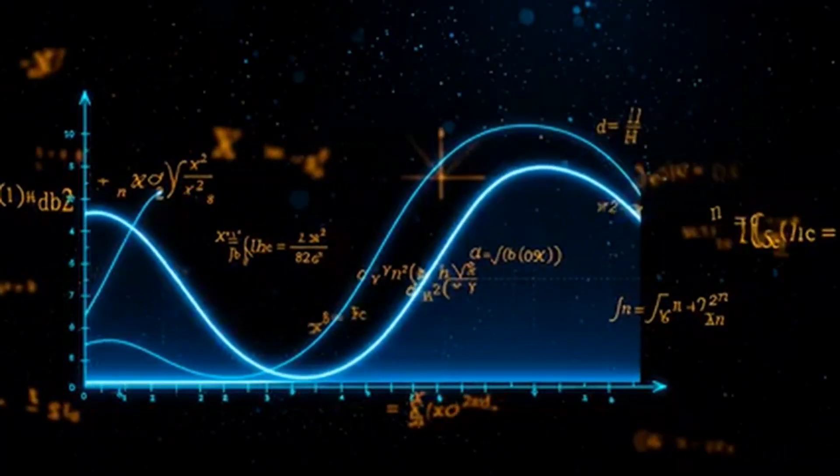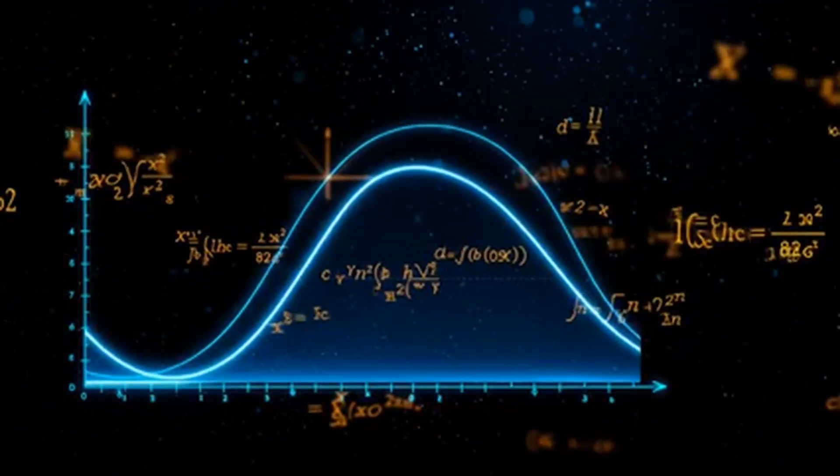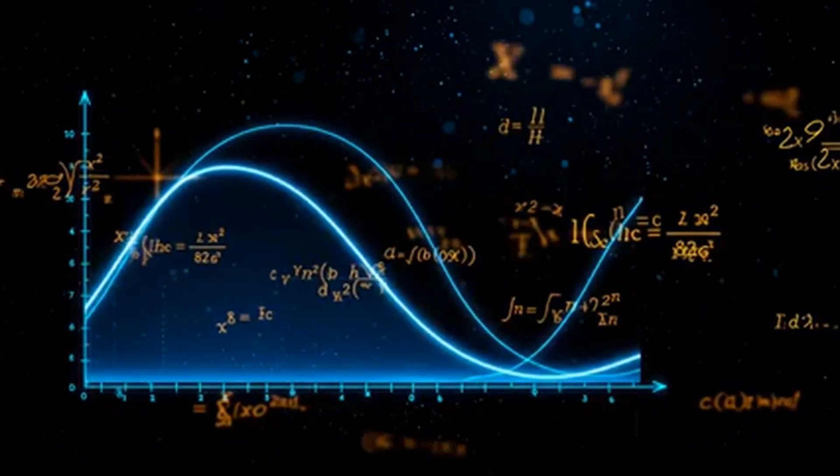This is written in your terms as the integral of f prime of t with respect to t equals f of b minus f of a.